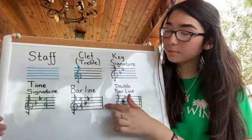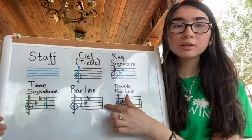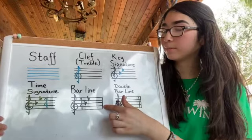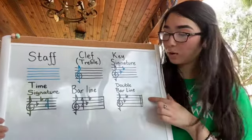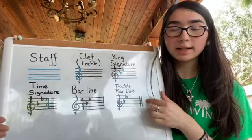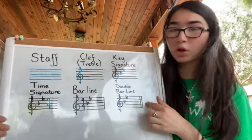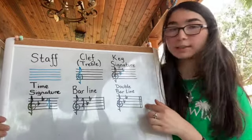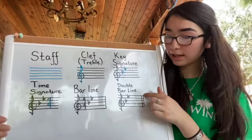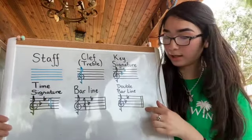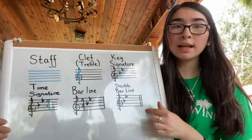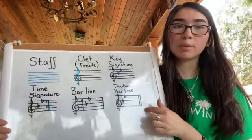Next, we have the bar line. The bar line separates each measure from one another. And lastly, we have the double bar line. The double bar line separates two or more sections of a piece of music, or if the second bar line is bold, that means that is the end of a movement or piece.